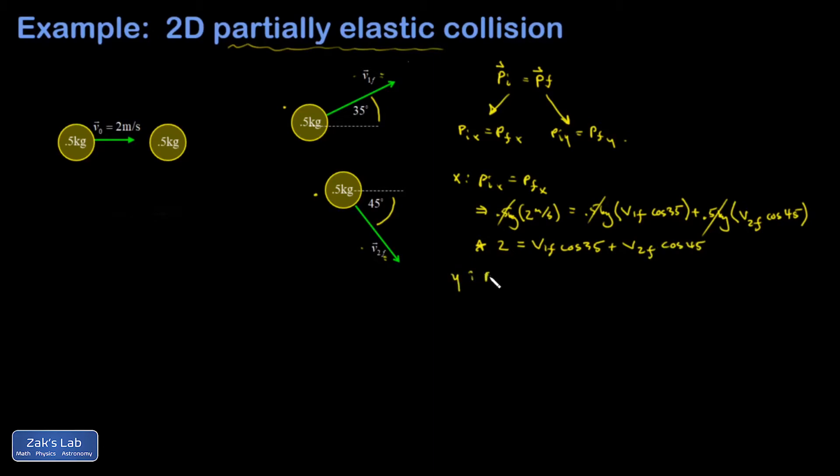Then I look at the y direction. P initial in the y direction has got to be equal to P final in the y direction. So the initial y momentum is 0 because everything was only moving horizontally. So that's equal to 0. So my final momentum must be 0.